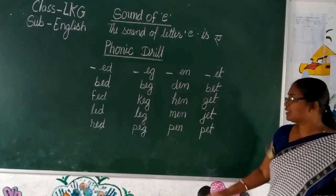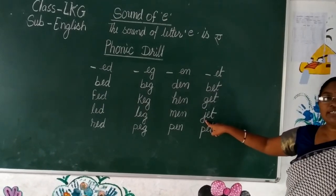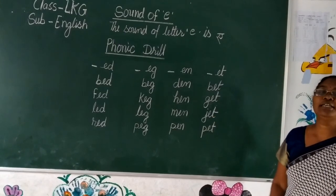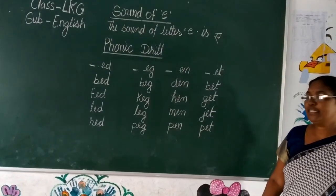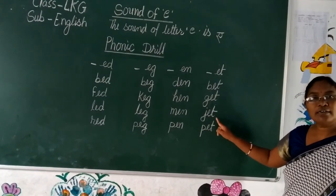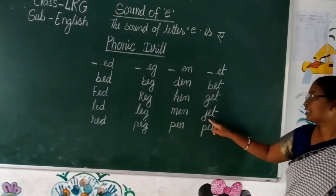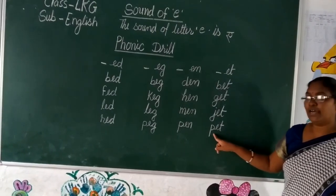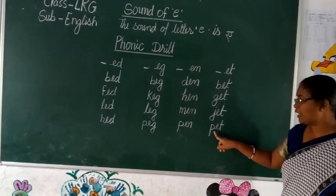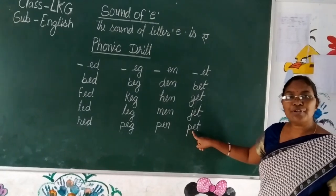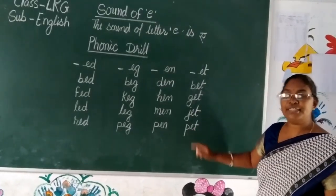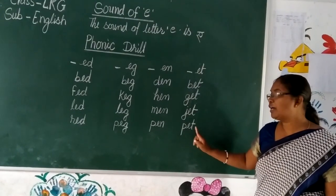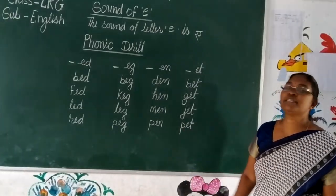Next we added letter J before ET. The phonics sound is 'j', 'et', 'jet'. Last we added letter P before ET. The phonics sound is 'p', 'et', 'pet'.